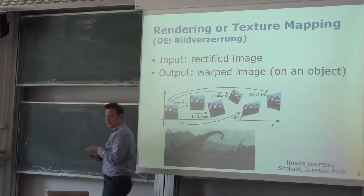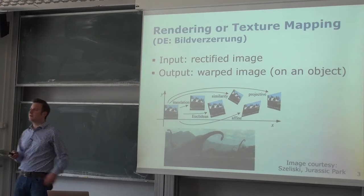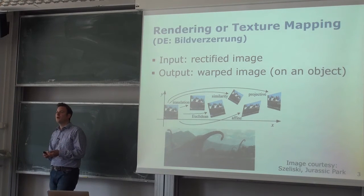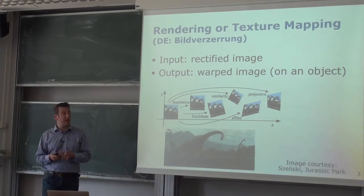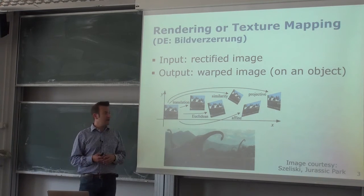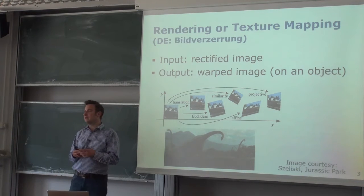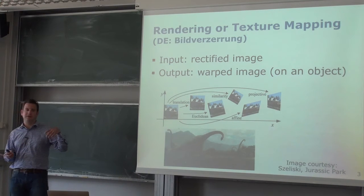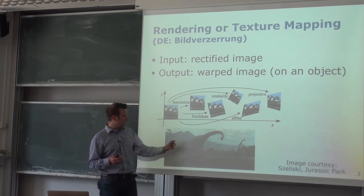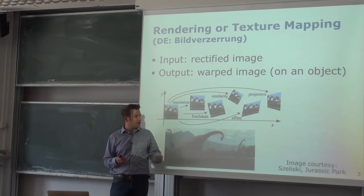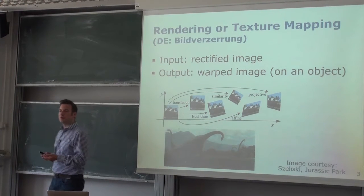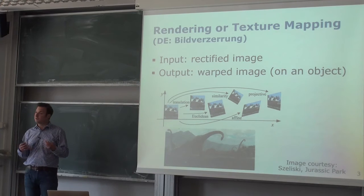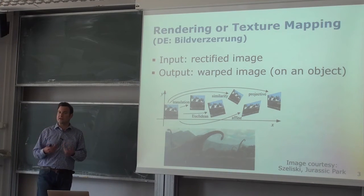We can also use the other way around: take a rectified input image and distort or warp it onto a 3D structure. This is very frequently used in any type of rendering. If you want to render a scene, you typically have a texture and have to wrap it — for example, a part of the dinosaur — onto the geometric model. This is then used to generate photorealistic images or renderings of scenes.